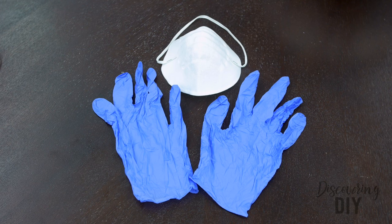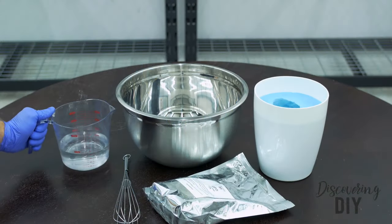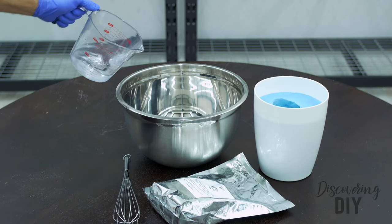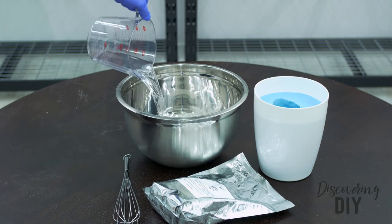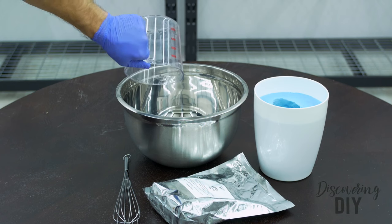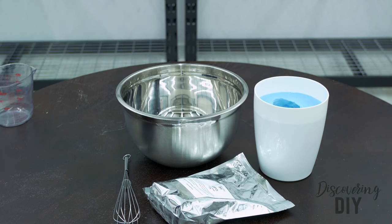First, put on your protective masks and gloves before handling the casting powder. Pour one and three-quarter cups of cool water into a large mixing bowl. If hard water is a concern, use distilled or bottled water for a smoother casting.